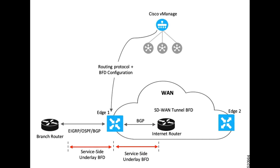Bidirectional Forwarding Detection (BFD) in SD-WAN is used to monitor the real-time condition of the underlying transport network and can detect link failures in less than one second. BFD packets are initiated by each router across every tunnel that is brought up as part of the SD-WAN fabric, and serve two different purposes: liveliness detection and path quality monitoring.